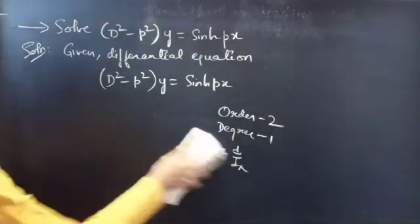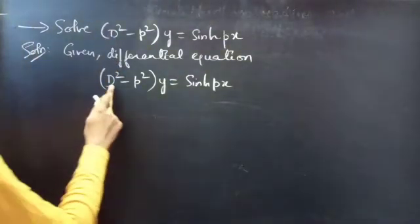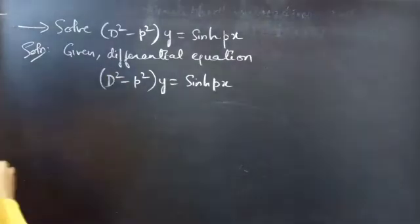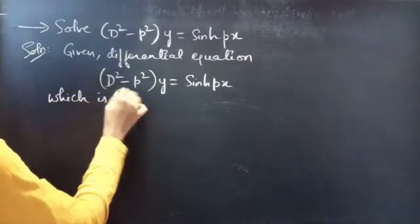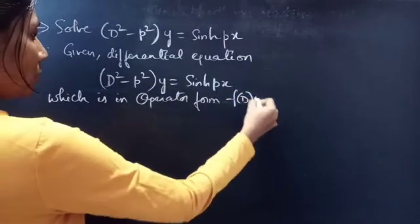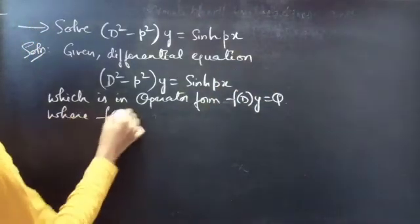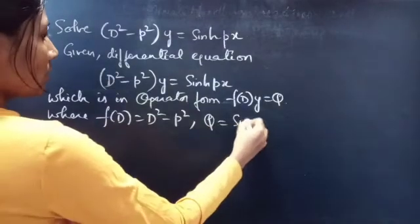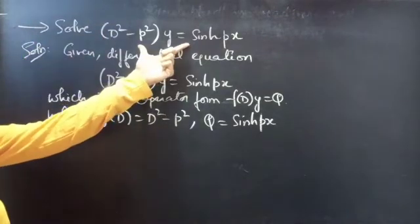The given differential equation is in operator form: f(D)·y = Q, where f(D) = D² - p² and Q = sinh(px). Now we need to find the solution to this non-homogeneous equation.